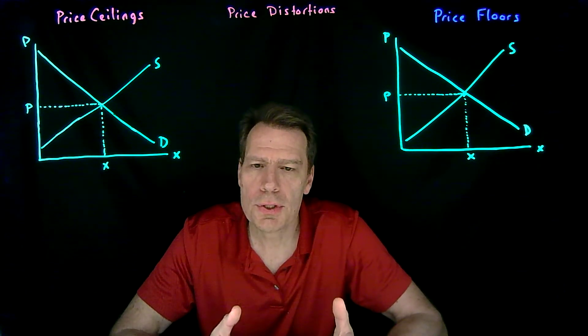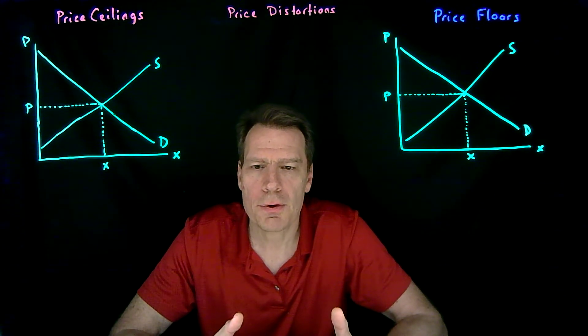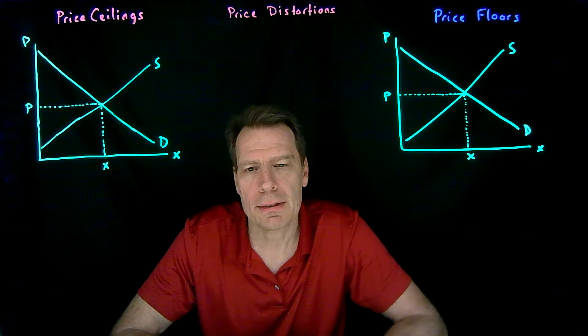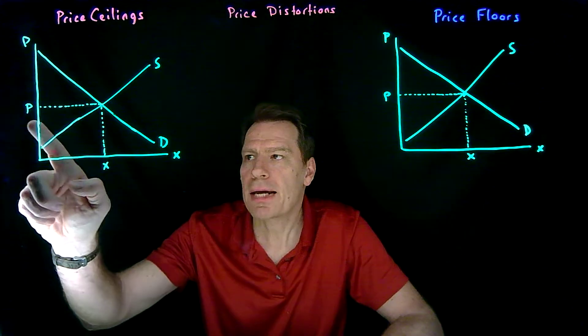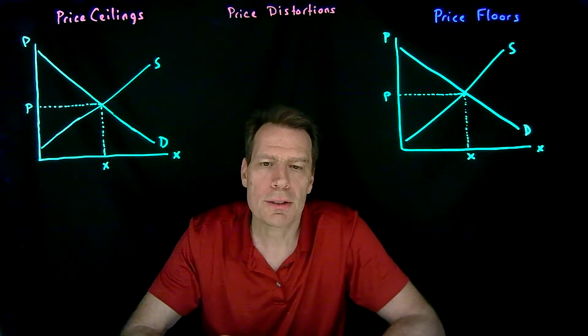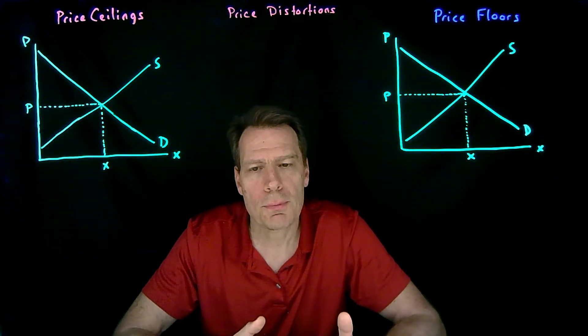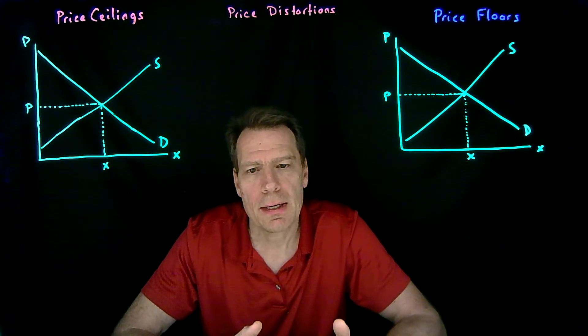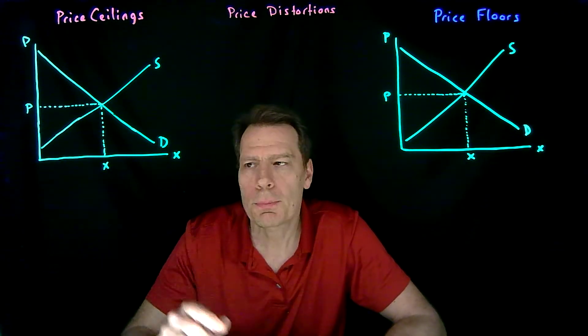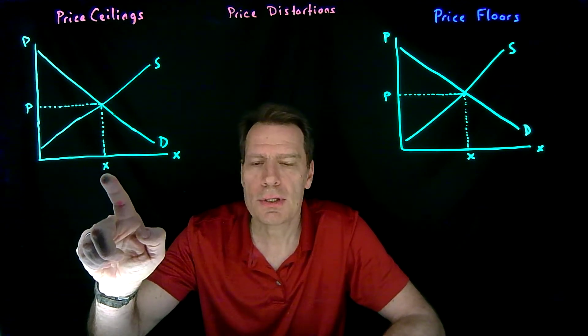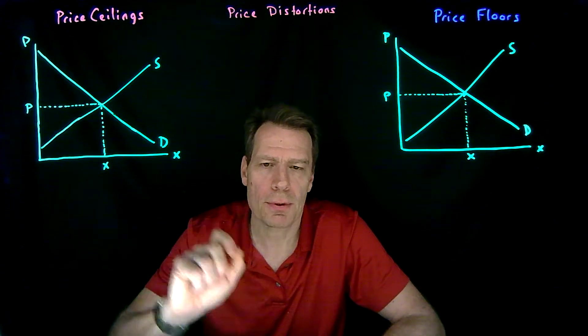We've seen that if the conditions of the first welfare theorem are not violated, then prices will coordinate consumers and firms in such a way that the markets will produce the efficient level of output.